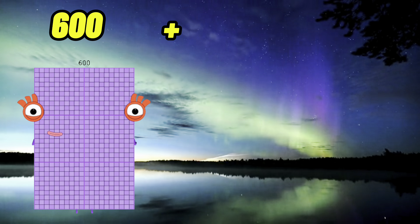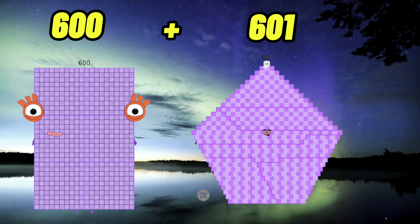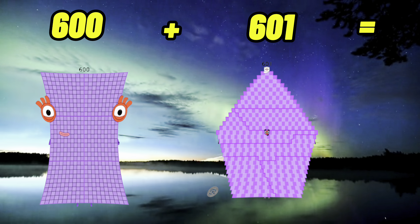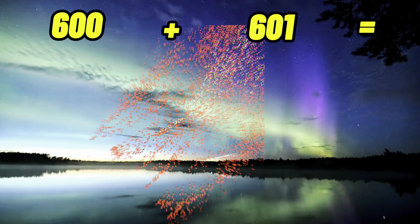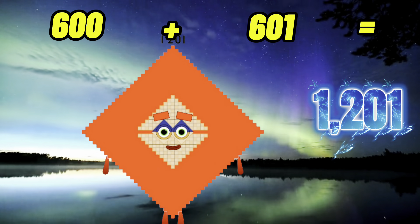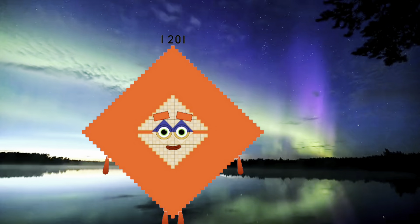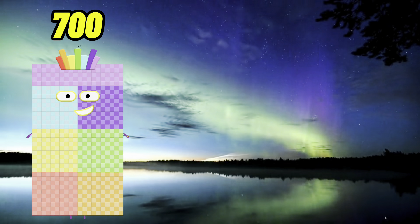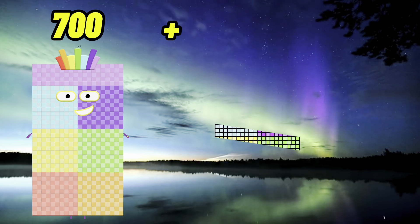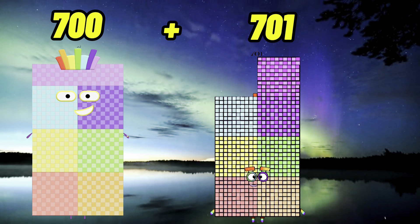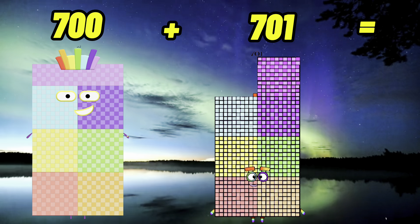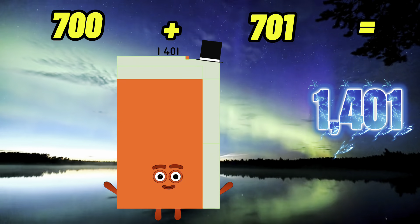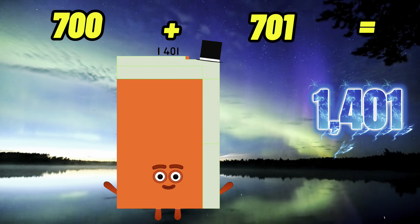600 plus 601 equals 1,201. 700 plus 701 equals 1,401.